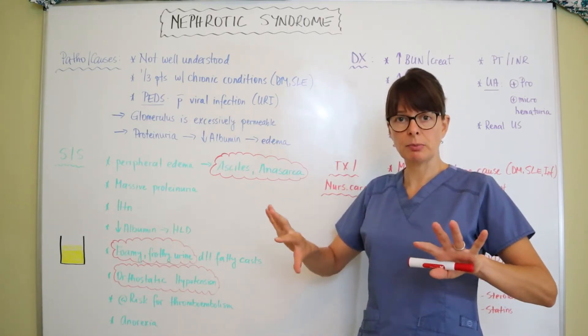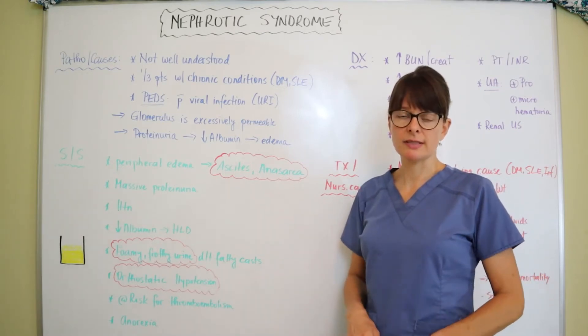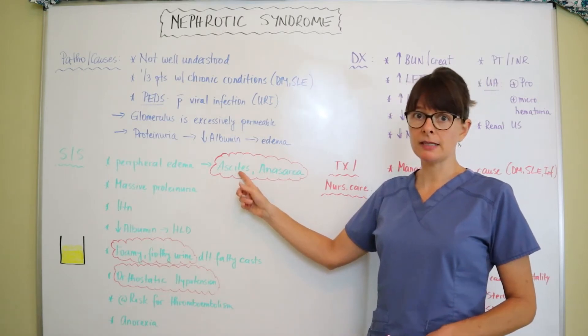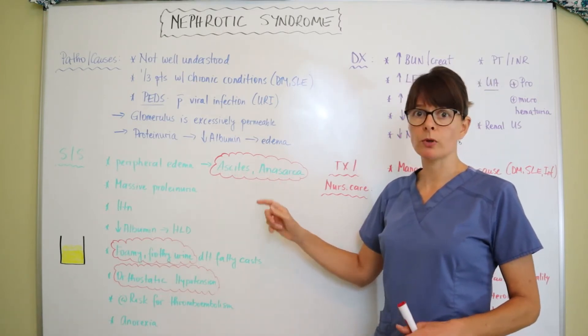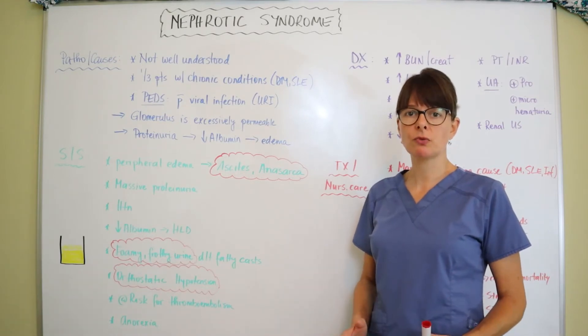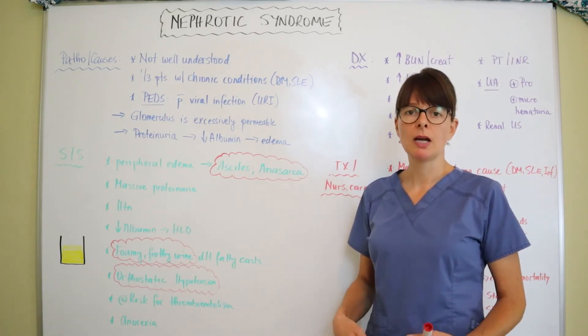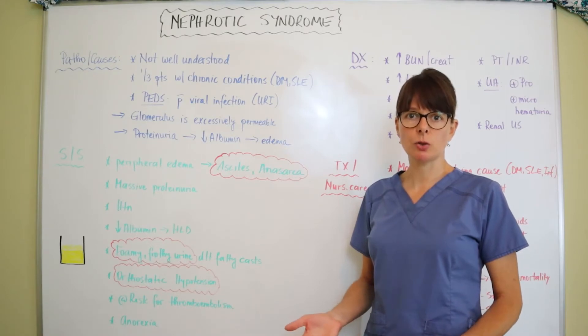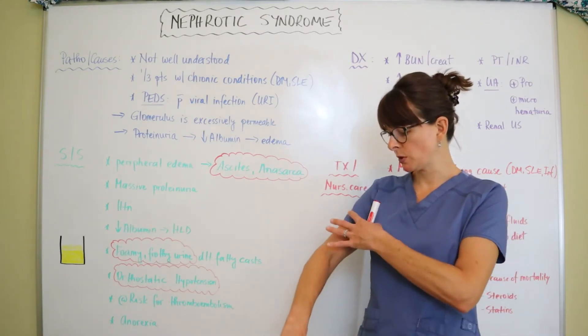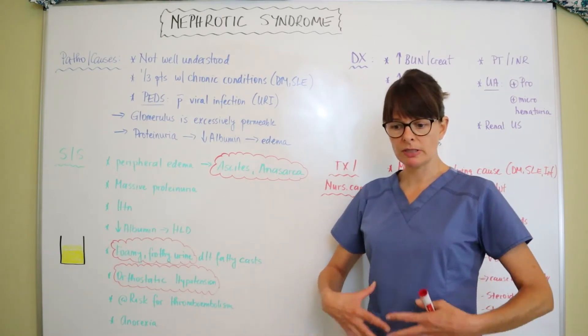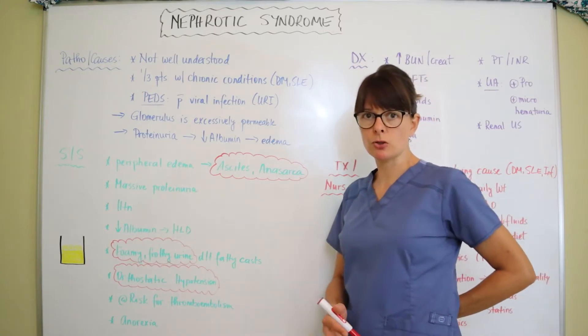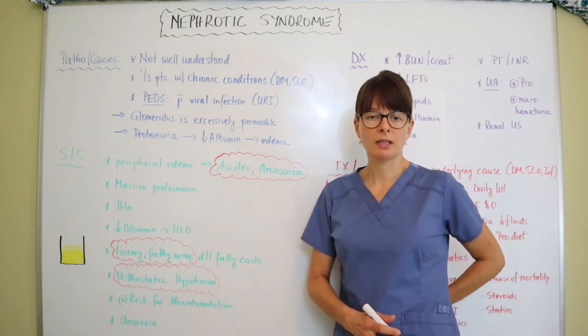The fluid can be seen in ascites and even anasarca, which is just generalized edema. This is much more significant than just peripheral edema that you would see in a patient with, let's say, heart failure. There's generalized edema that you can see in the arms, in the extremities, in the belly, not only the ascites.